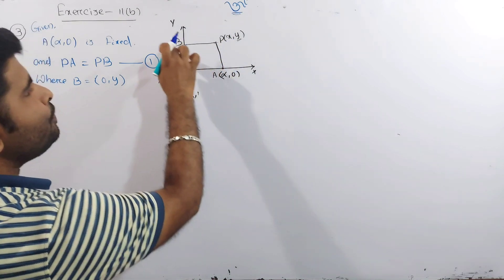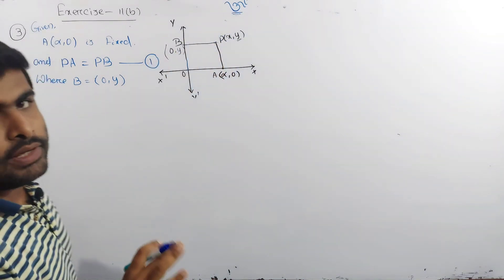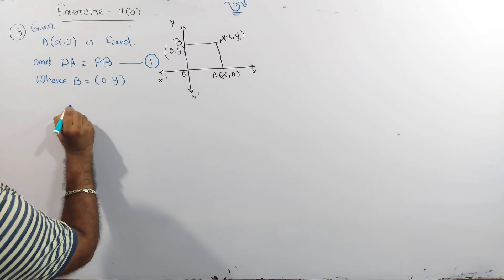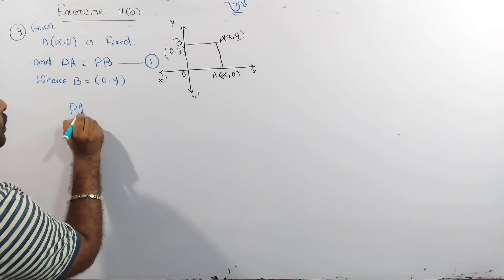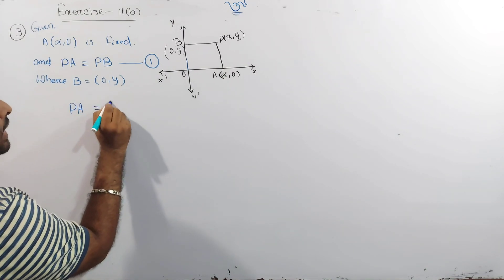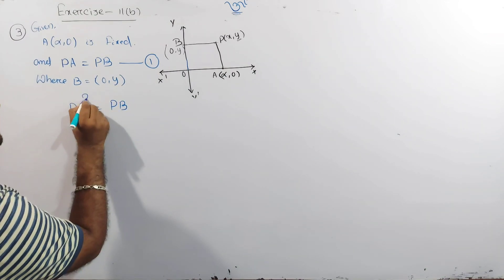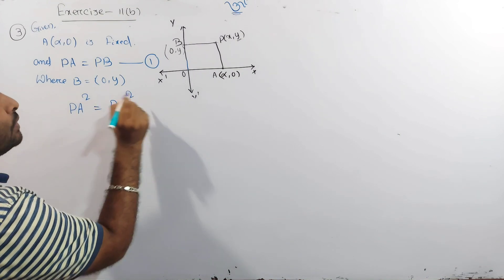We find the value of PA and PB. Since PA equals PB, we write PA² equals PB².